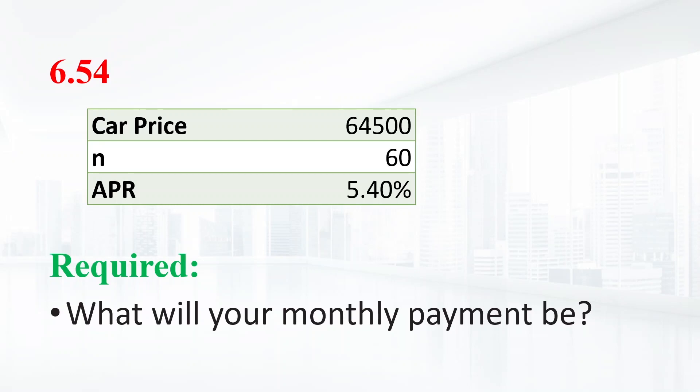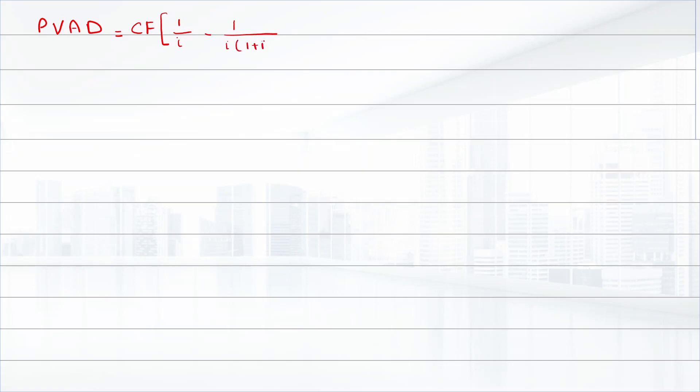In this question, we can use the present value of annuity due equation to find the monthly payments. This present value annuity due is equal to cash flow into 1 over i minus 1 over i into 1 plus i raised to power n, and multiply by 1 plus i.